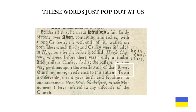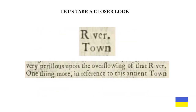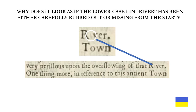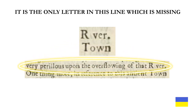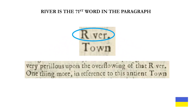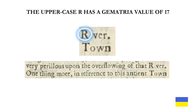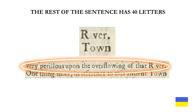These words just pop out at us: river and town. Let's take a closer look. Why does it look as if the lowercase i in river has been either carefully rubbed out or missing from the start? It is the only letter in this line which is missing. River is the 71st word in the paragraph. The uppercase R has a gematria value of 17.